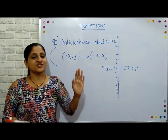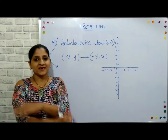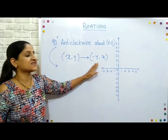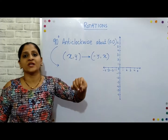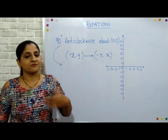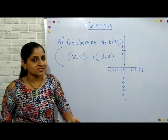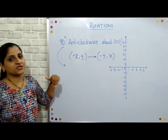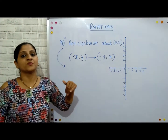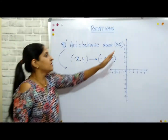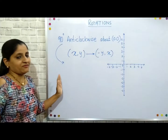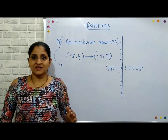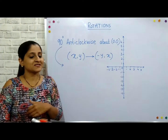It's very easy — you don't have to memorize any formula. Just swap x and y, and after you swap them, change the sign of the coordinate which is on the left-hand side. Why the left-hand side? Because in anti-clockwise rotation we are moving from right to left.